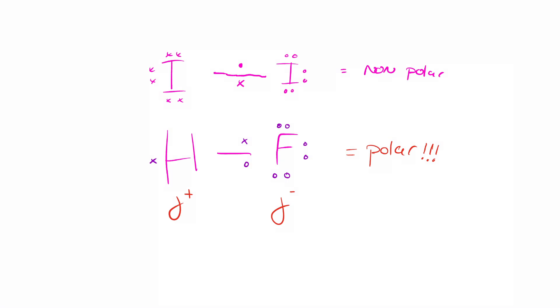If we have a covalent bond like the one between two iodine atoms in an iodine molecule, there's obviously no difference in electronegativity. So by default, it's not a polar bond.